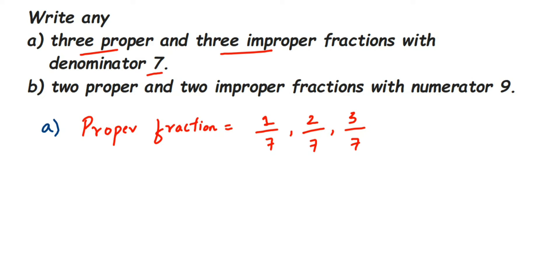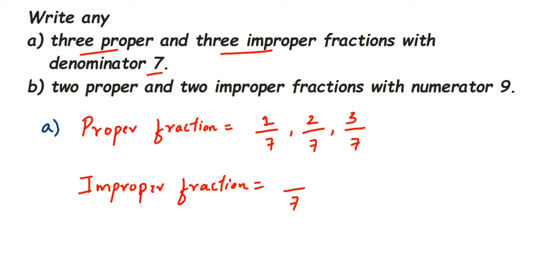Now let's write the improper fractions. Again, we want denominator 7, so let me write 7 in the denominator. Improper fractions are the ones where the numerator is greater than the denominator, so I need a number which is greater than 7.